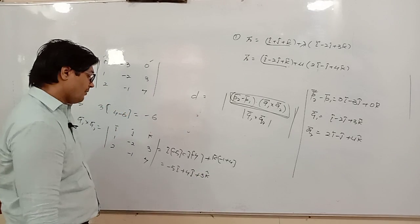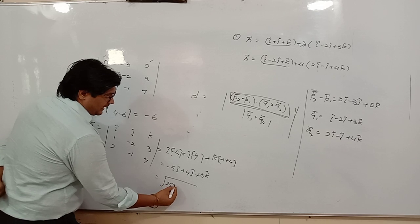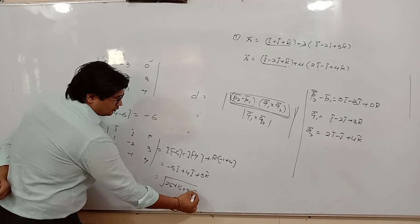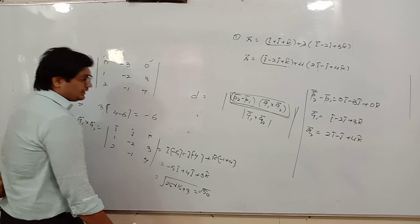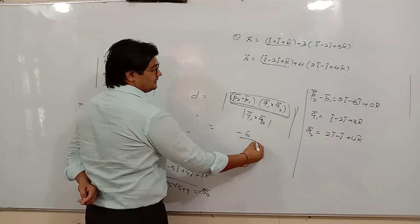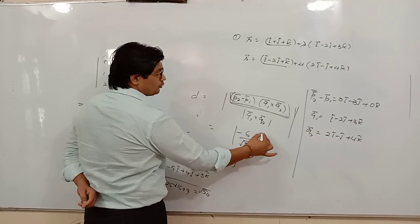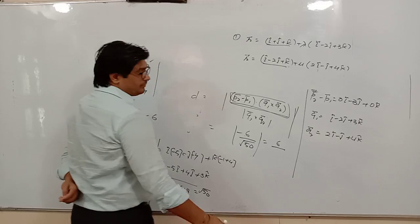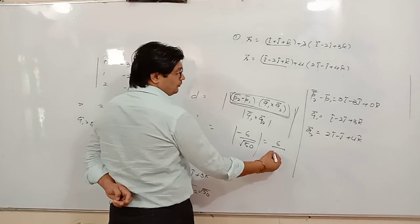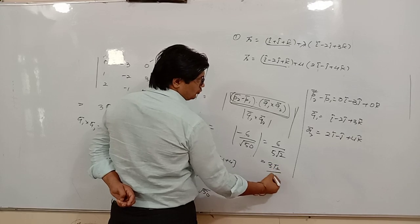Now we find the magnitude of this vector: √(25 + 16 + 9) = √50. So the formula becomes: |−6|/√50 = 6/√50. Since 50 = 25 × 2 = 5√2, we get 6/(5√2) = 6√2/10 = 3√2/5. So the shortest distance is 3√2/5.